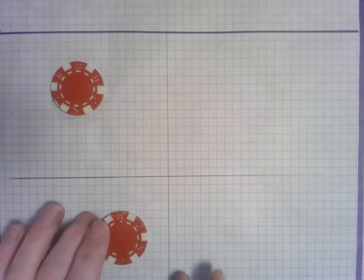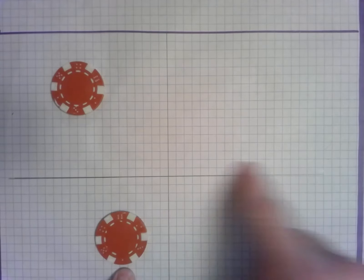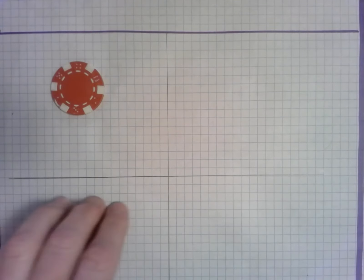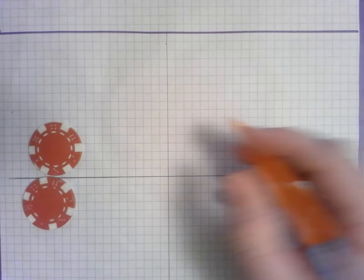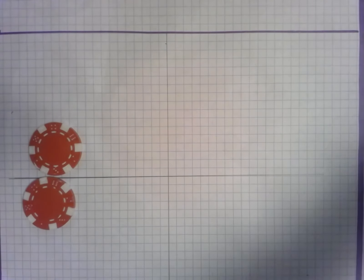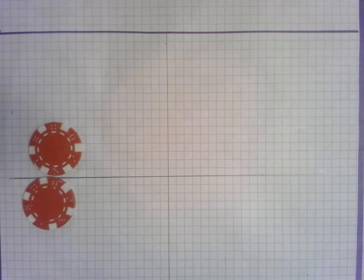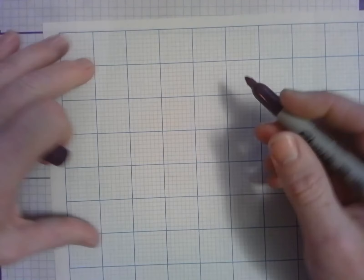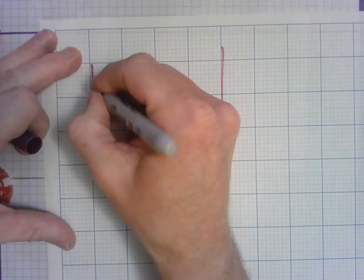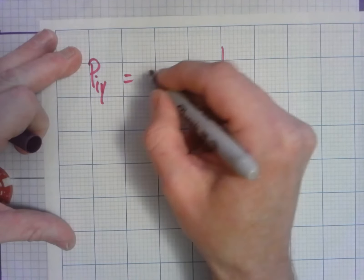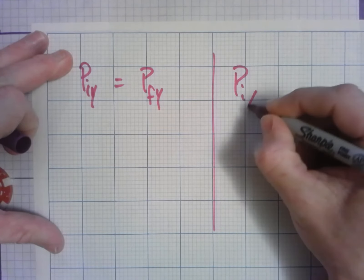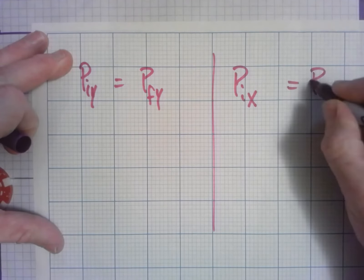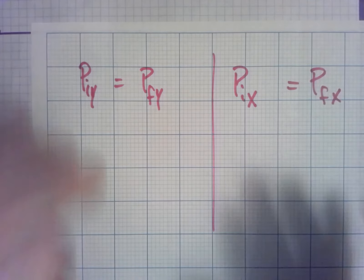When that happens, we have to deal with the y-dimension and the x-dimension separately. We say that conservation of momentum in the y-dimension holds, and conservation of momentum in the x-dimension holds separately. So momentum initial y equals momentum final y, and at the same time momentum initial x equals momentum final x. You have to separate the two dimensions by finding the components of the momentum.